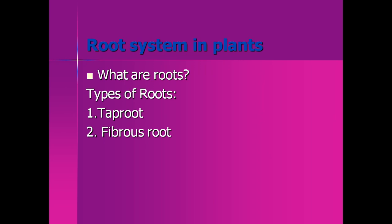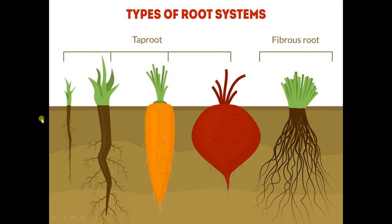The next topic is the root system in plants. The root is the part of the plant that is present below the soil and holds the plant firmly in the soil. There are two kinds of roots: taproot and fibrous root. A taproot has one large main root with several small roots branching off from it. Examples include carrot, radish, and turnip.